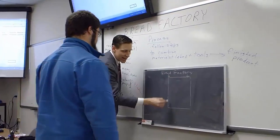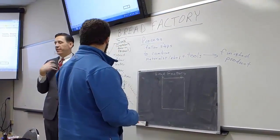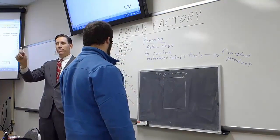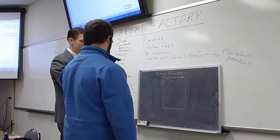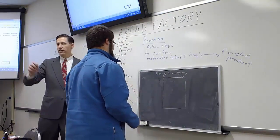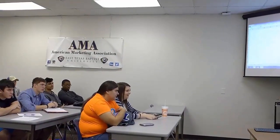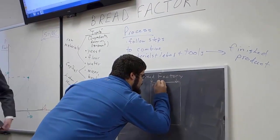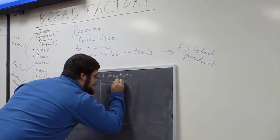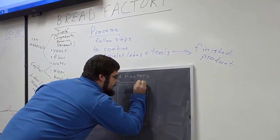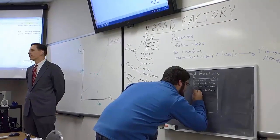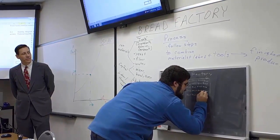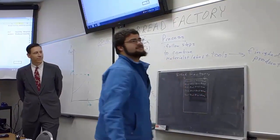Write the word 'bread' as many times as you can inside the space, and I'm going to be quality control — I'll come and count, and it has to be legible. If it's illegible, that represents a loaf that went bad and we can't sell. Here's the raw materials — write it inside the factory space.